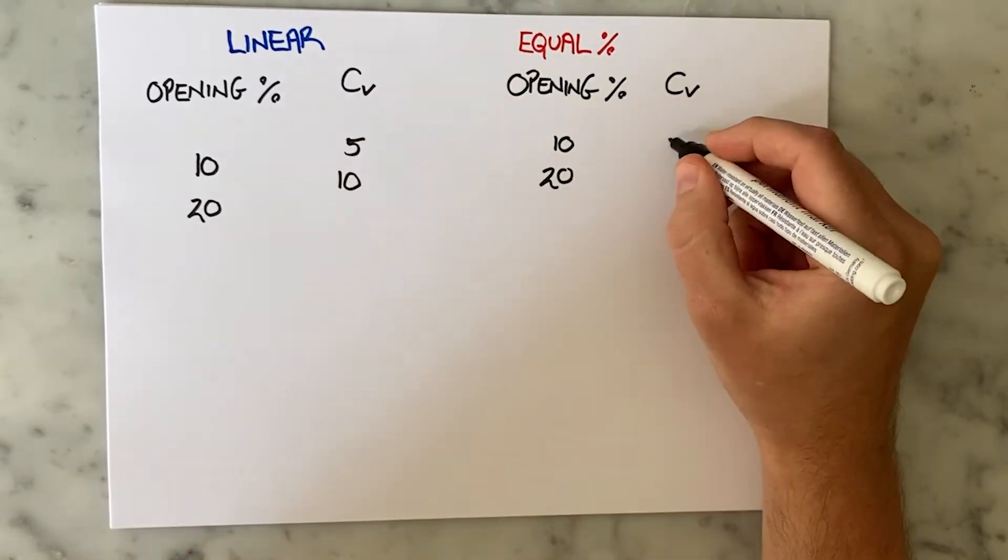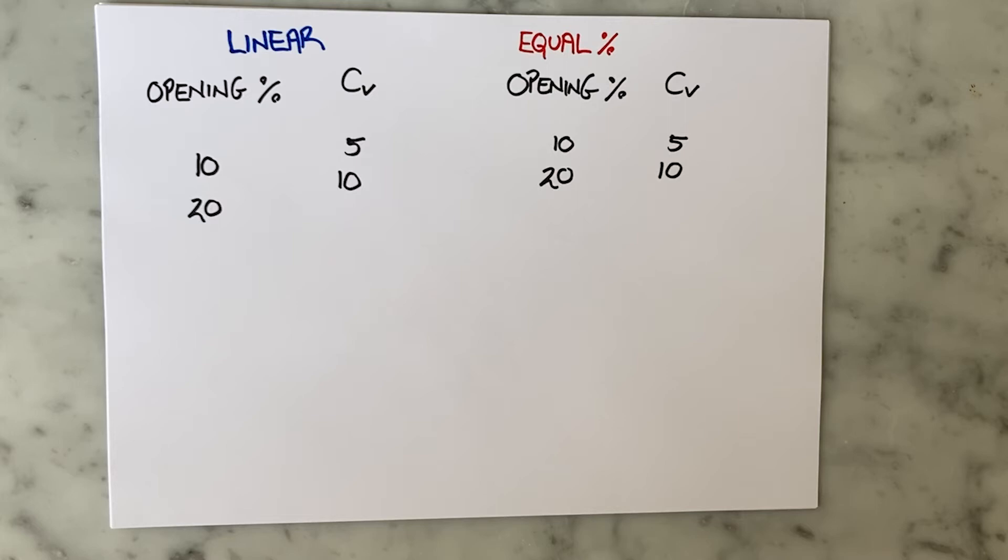Now imagine we increase the opening to 20% and both CVs go up to 10. Despite them looking identical at this point, they are not going to continue in the same way because I have told you their characteristics.